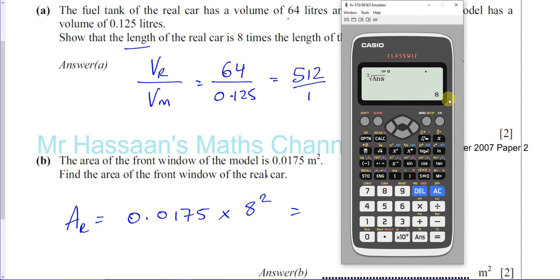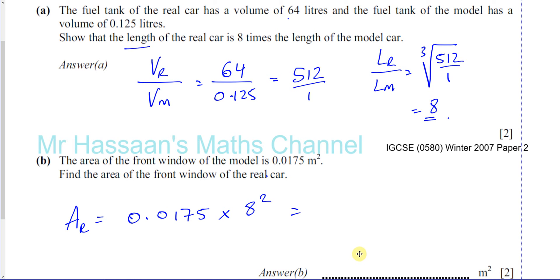So it's going to be 8 squared, which is 64 times the area of the model 0.0175, which gives us 1.12 meters squared. So you have 1.12 meters squared and there we have the answer to question number 16.